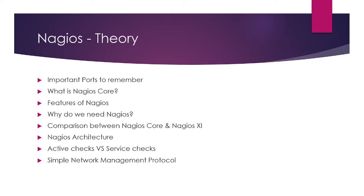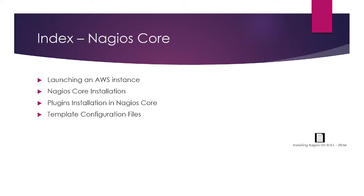Here is what we are going to cover: important words to remember, Nagios Core features, why we use Nagios, comparison between Nagios Core and Nagios XI, the Nagios architecture, active checks versus passive checks, SNMP (Simple Network Management Protocol) in Nagios Core, and how to launch an AWS instance, Nagios Core installation, and plugin installation in Nagios Core.